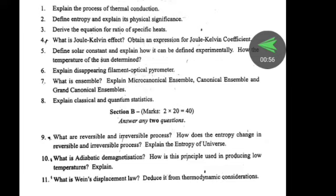Fifth: define solar constant and explain how it can be determined experimentally, and how the temperature of the sun is determined. Sixth: explain the disappearing filament optical pyrometer. Seventh: explain microcanonical ensemble, canonical ensemble, and grand canonical ensemble.